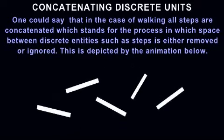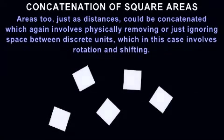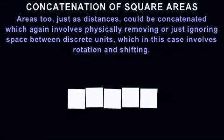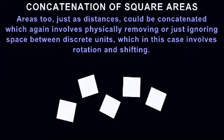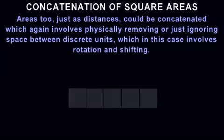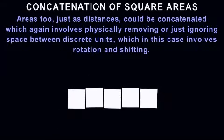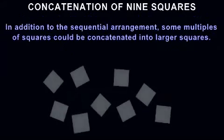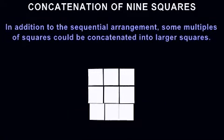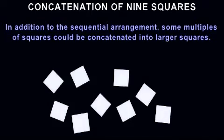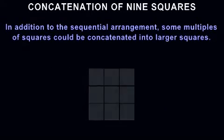Areas can be concatenated just as distances, which involves physically removing or ignoring the space between discrete units through rotation and shifting. In addition to sequential arrangement, some multiples of squares can be concatenated into larger squares.